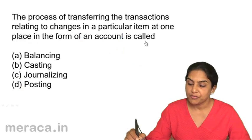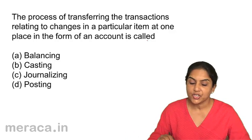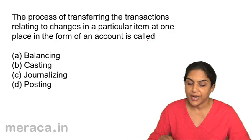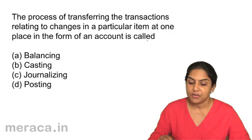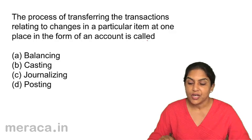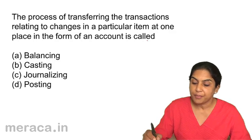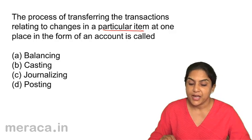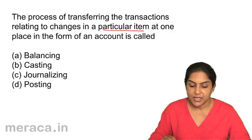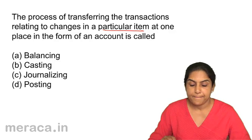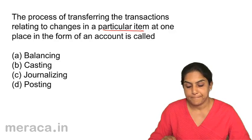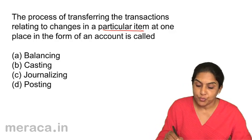The process of transferring transactions relating to changes in a particular item at one place in the form of an account is called: A. Balancing, B. Casting, C. Journalizing, or D. Posting. Correct answer is D: Posting.